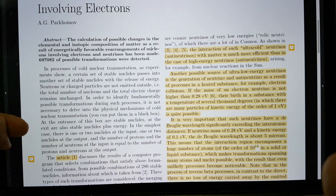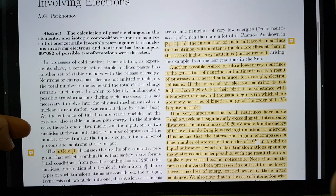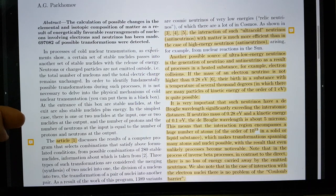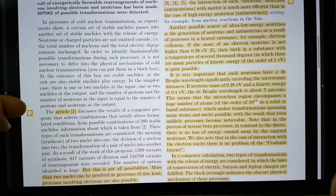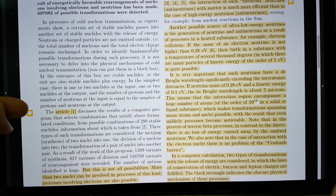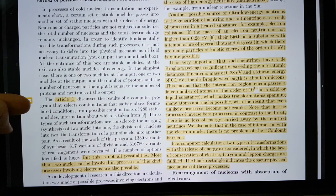At the entrance of this black box are the stable nuclides. At the exit are also stable nuclides plus energy. In the simplest case, there is one or two nuclides at the input, one or two nuclides at the output, and the number of protons and neutrons at the input equals the number of protons and neutrons at the output. The article 1, which was his work from last year, discusses this.